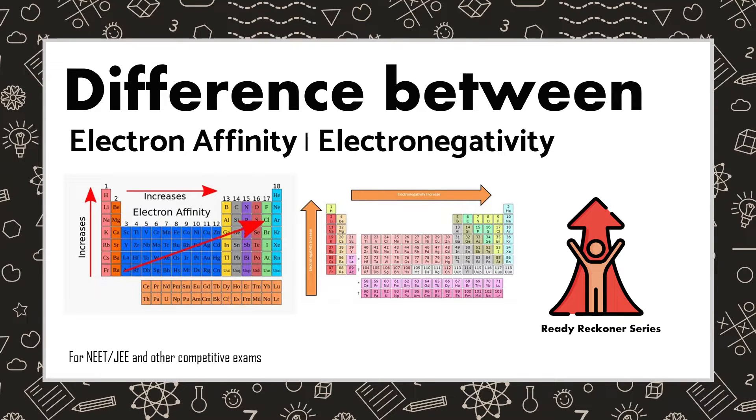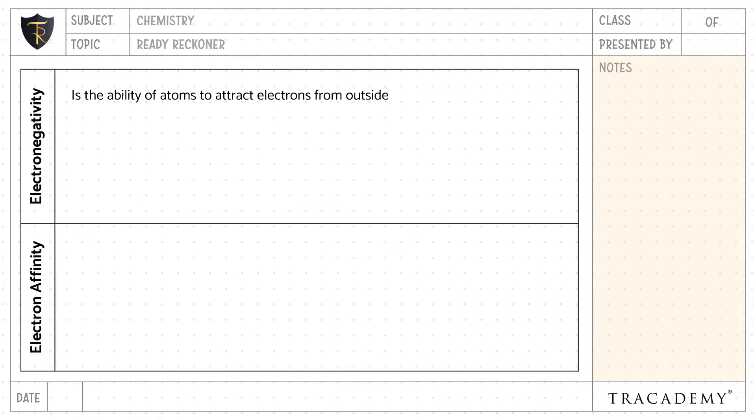In this video, let's understand the difference between electronegativity and electron affinity. Electronegativity is the ability of atoms to attract electrons from outside, whereas electron affinity is the amount of energy liberated when a molecule or neutral atom acquires an electron from outside.